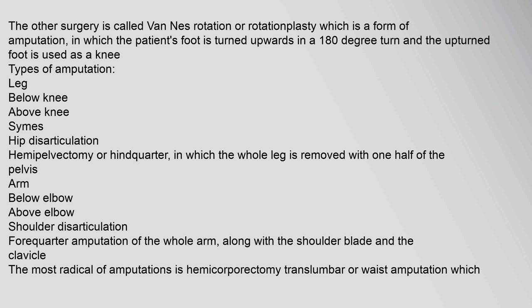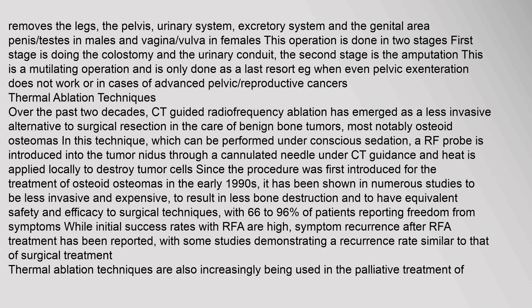Types of amputation include: leg — below knee, above knee, knee disarticulation, hip disarticulation, hemipelvectomy or hindquarter, in which the whole leg is removed with one half of the pelvis. Arm — below elbow, above elbow, shoulder disarticulation, forequarter amputation of the whole arm along with the shoulder blade and clavicle. The most radical amputation is hemicorporectomy (translumbar or waist amputation), which removes the legs, pelvis, urinary system, excretory system, and genital area. This operation is done in two stages and is only done as a last resort.